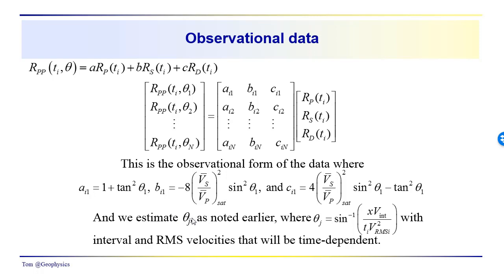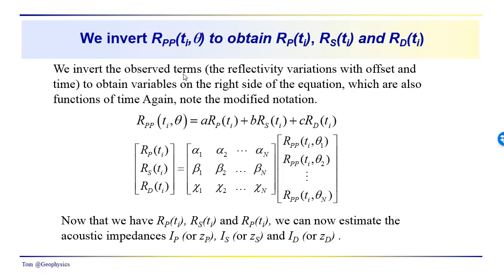We estimate theta j as noted earlier, where theta j can be expressed in terms of the interval velocity over the two-way travel time times the rms velocity squared. We realize that these interval and rms velocities are going to be time dependent as well, so it's additional information that we need.